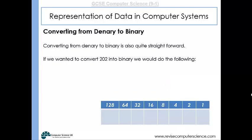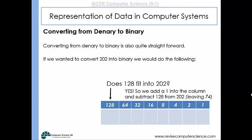Now, converting from denary into binary is also fairly straightforward. If you were given the denary number 202 and asked to work out its binary equivalent, you would look at the values of each column in the binary number system and ask: does this column's value fit into the number we're converting? To begin with, does 128 fit into 202? Yes, it does. So we put a one in that column and subtract 128 from 202, leaving 74.